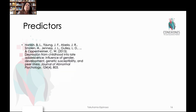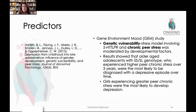Predictors tend to fall into two big categories. First, research looks at demographics — gender, genetic susceptibility, and age of onset tend to clearly correlate with depressive states. In the Hankin study, genetic vulnerability for stress combined with chronic peer stress was a very good indicator of depression, and girls who experienced greater peer stress were more likely to develop depression. So age, gender, and genetic susceptibility are used to predict who may be susceptible.